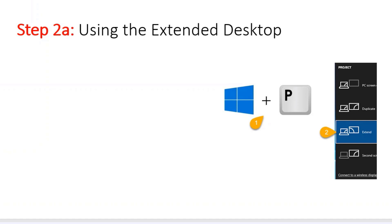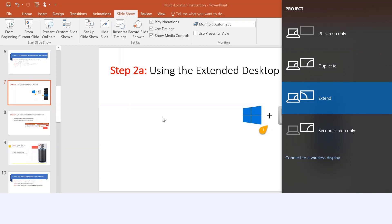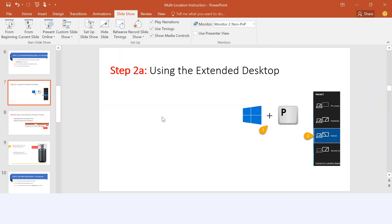To enable the extended desktop functionality, press the Windows key and the letter P on the keyboard. That will bring up a menu on the right-hand side. By default it's on duplicate, which just mirrors the screen. We want to choose Extend. Extend is going to make the projector screen an extension of the laptop screen. Unfortunately I cannot capture this in the recording, but you can actually move the mouse from left to right or right to left to get to the projector screen.